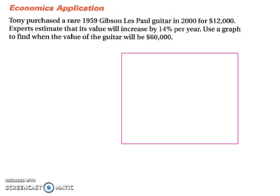Tony purchased a rare 1959 Gibson Les Paul guitar in 2000 for $12,000. Experts estimate that its value will increase by 14% per year. Use a graph to find when the value of the guitar will be $60,000.